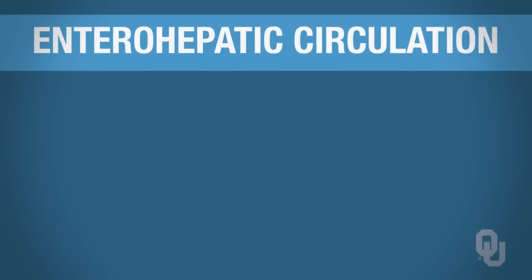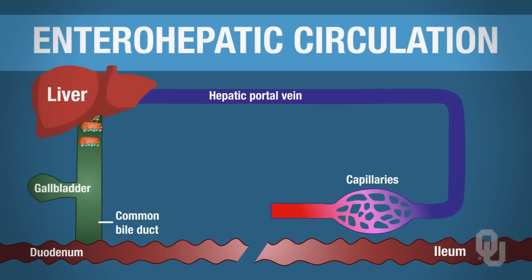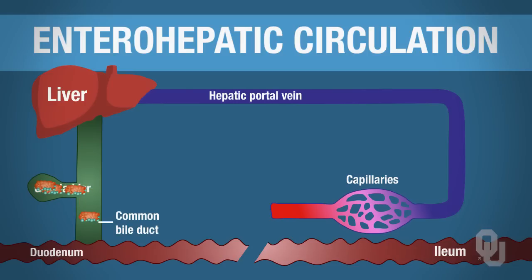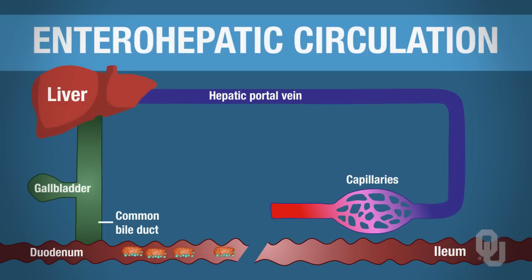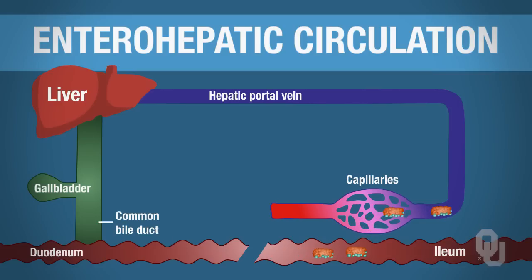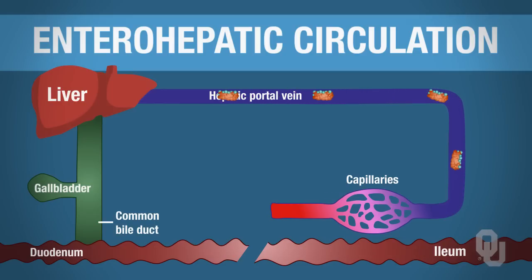We talked about how the liver produces bile salts and they get stored in the gallbladder. When needed, they pass through the common bile duct, through the ampulla of Vater, and through an open sphincter of Oddi, entering into the duodenum. The bile salts do their job — they emulsify the fat. And importantly, we can recycle these bile salts. When bile salts reach the ileum, they can be absorbed back into circulation, travel back to the liver, and be secreted again without having to make new ones.